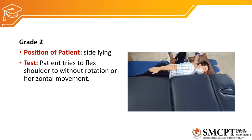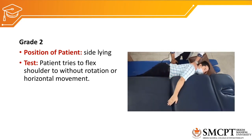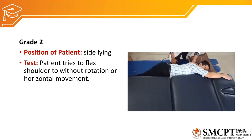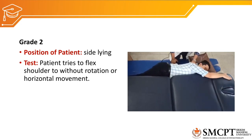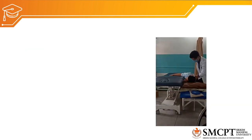For grade 2, the position should be gravity-eliminated — side lying — with a couch placed in front of the patient to support the arm. The patient flexes the shoulder while the arm is supported by the couch, eliminating gravity. You can observe in the video the shoulder flexion performed in horizontal plane with the arm supported.